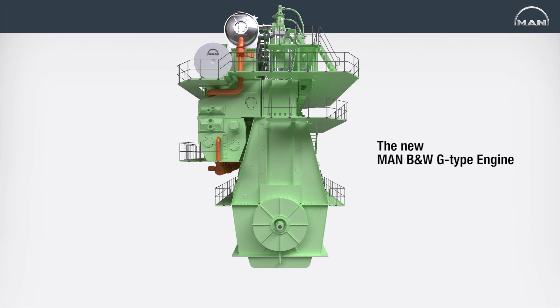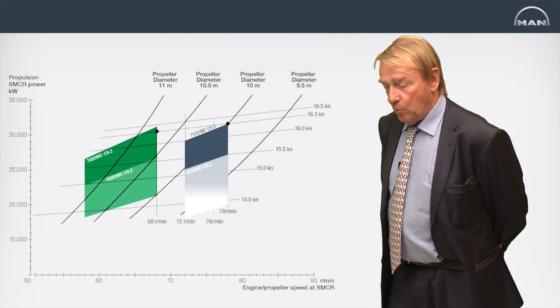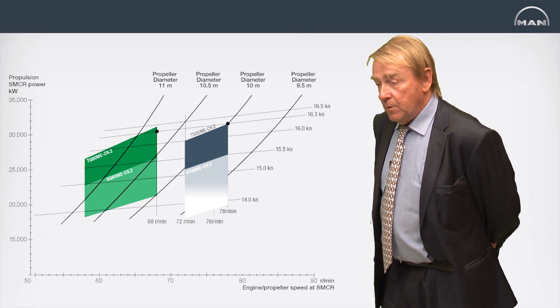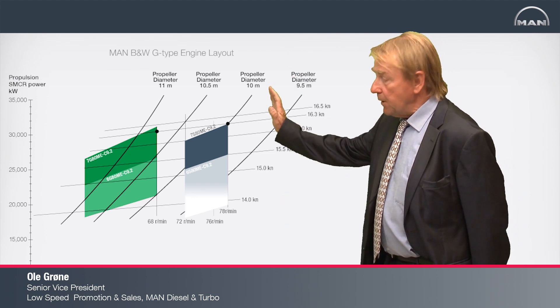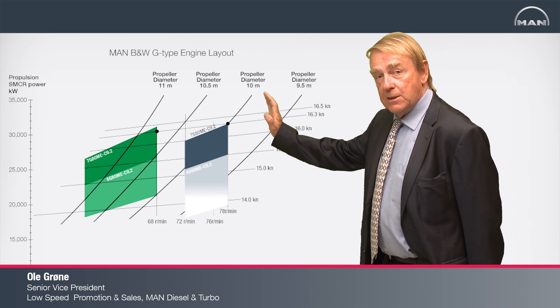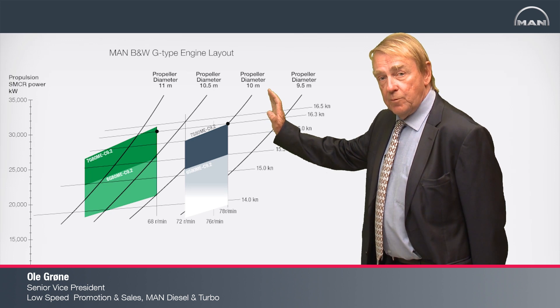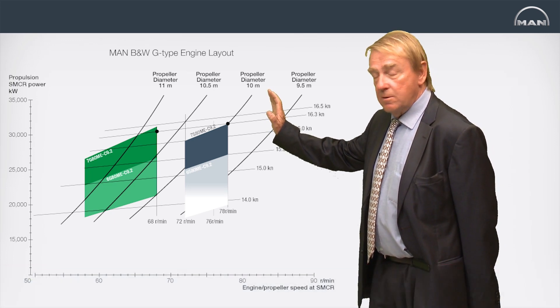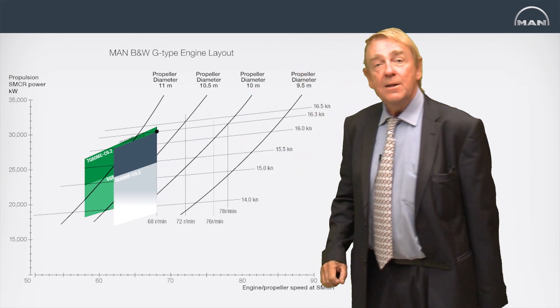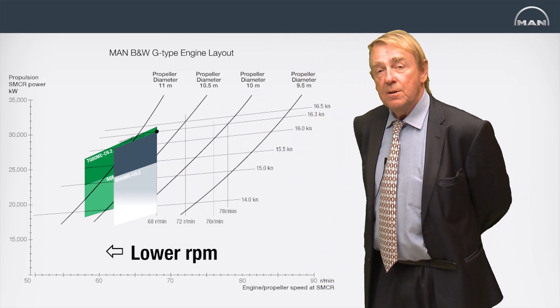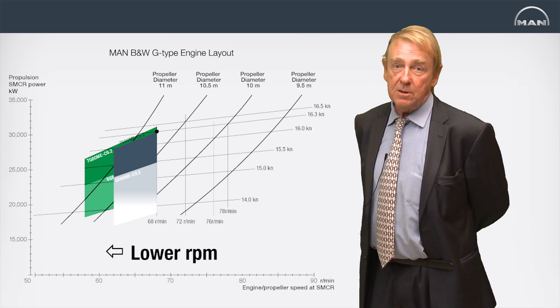With regard to the G engines, the essence is that we utilize a lower RPM. We have actually always been able to utilize lower RPMs by using our layout diagram with very flexible layout principles. What we do now with the G engines is that we push the whole diagram a little to the left. Thereby we get lower RPMs and better efficiency of the propeller.